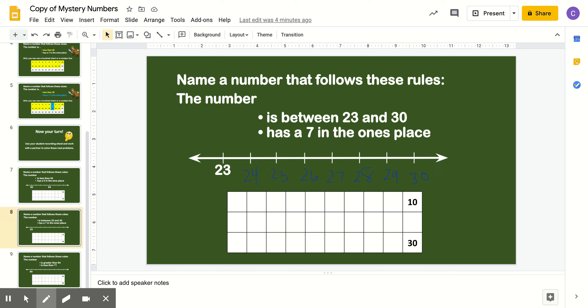So it also says it has a 7 in the ones place. All right. Which number has a 7 in their ones place? Right. 27. Remember, the ones place is here. 27 follows those rules. It's a number between 23 and 30 and has a 7 in the ones place. So 27 was our mystery number.